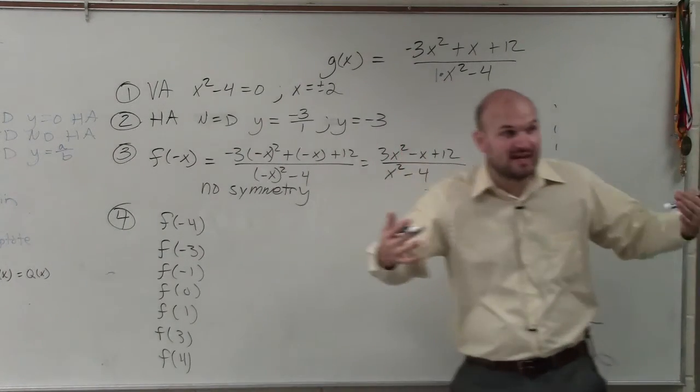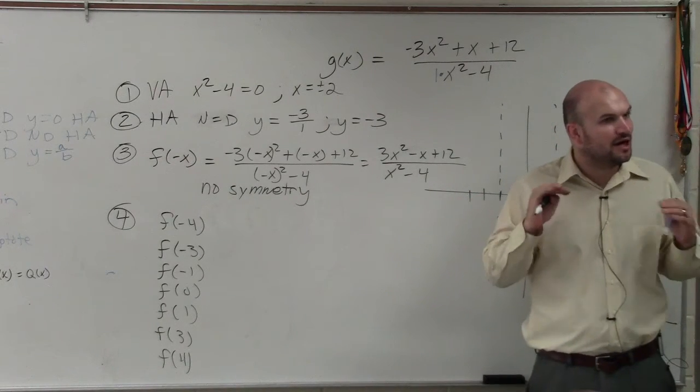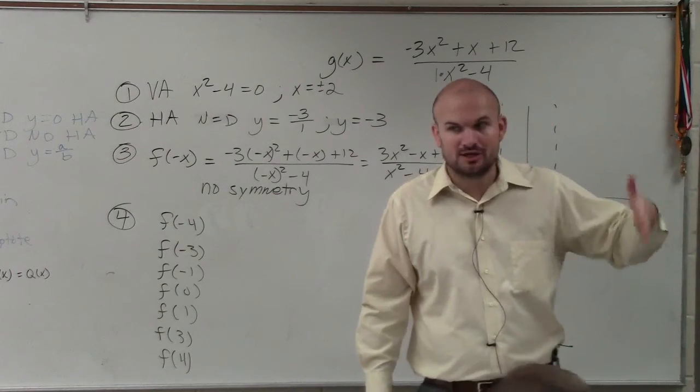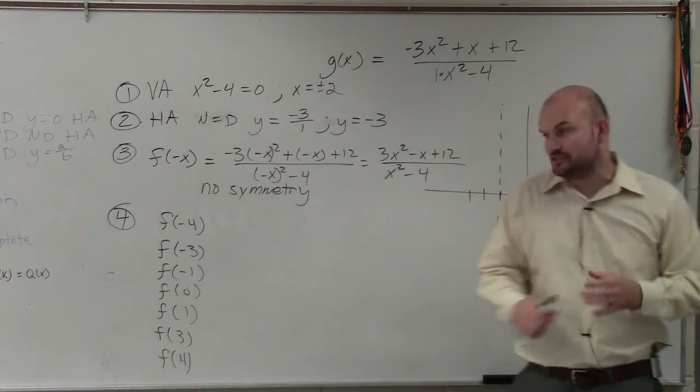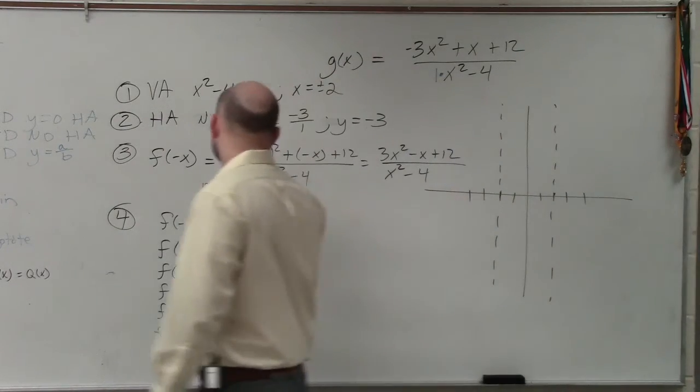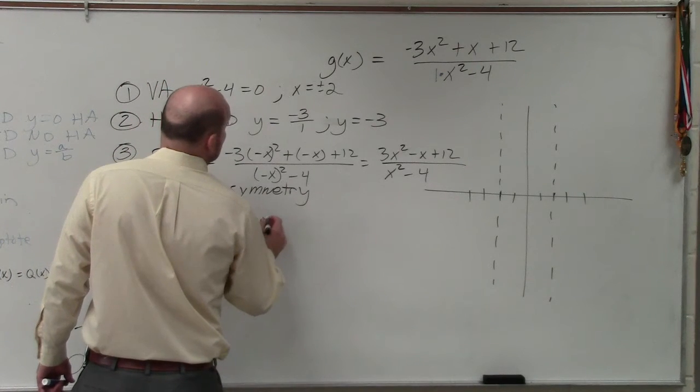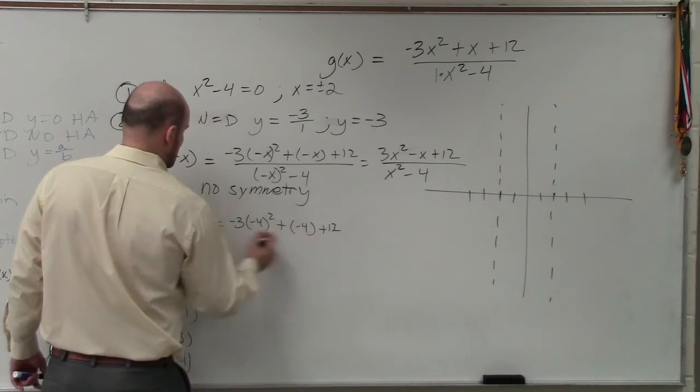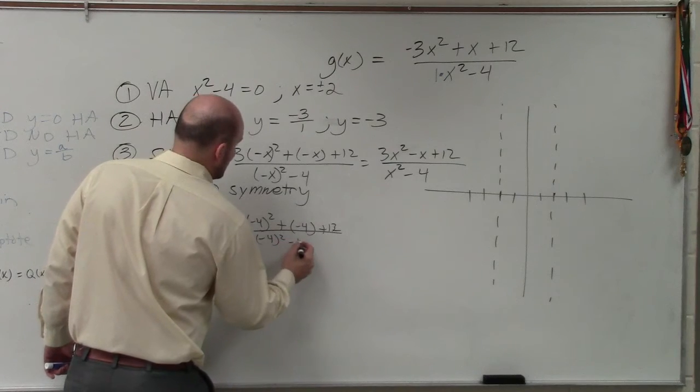So if you don't have a calculator, do two points to the right and two points to the left of every asymptote. If you have a calculator, you can use your calculator to aid you, but you're still going to need to show me at least a point to the left and to the right. So basically, you're just going to do negative 3 times negative 4 squared plus negative 4 plus 12 divided by negative 4 squared minus 4.